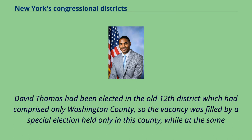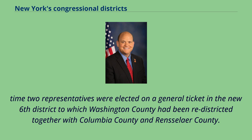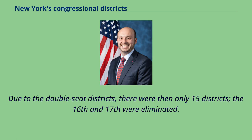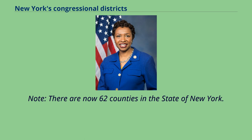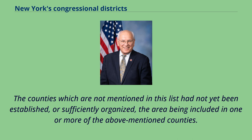David Thomas had been elected in the old 12th district, which had comprised only Washington County, so the vacancy was filled by a special election held only in this county, while at the same time two representatives were elected on a general ticket in the new 6th district, to which Washington County had been redistricted together with Columbia County and Rensselaer County. Due to the double-seat districts, there were then only 15 districts; the 16th and 17th were eliminated. Note: there are now 62 counties in the state of New York. The counties which are not mentioned in this list had not yet been established or sufficiently organized, the area being included in one or more of the above-mentioned counties.